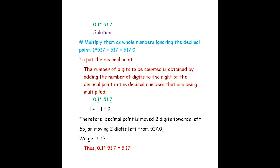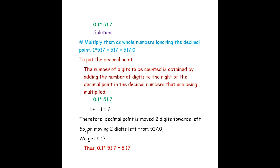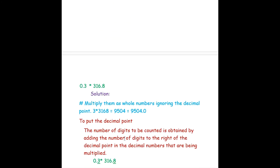To place the decimal point, we count the digits to the right of the decimal point: in 0.1 there is one digit, and in 51.7 there is also one digit, giving 1 plus 1 equals two digits. Moving two digits towards the left from 517.0 gives us 5.17. Thus 0.1 into 51.7 is 5.17.